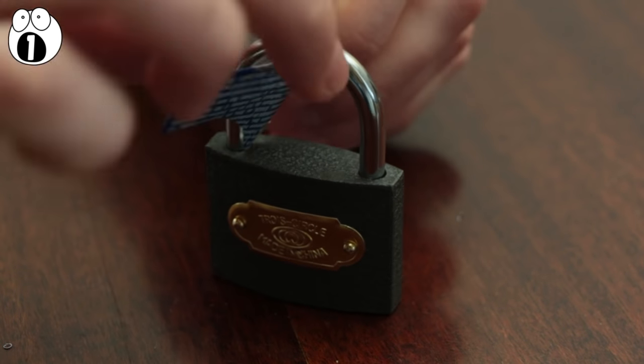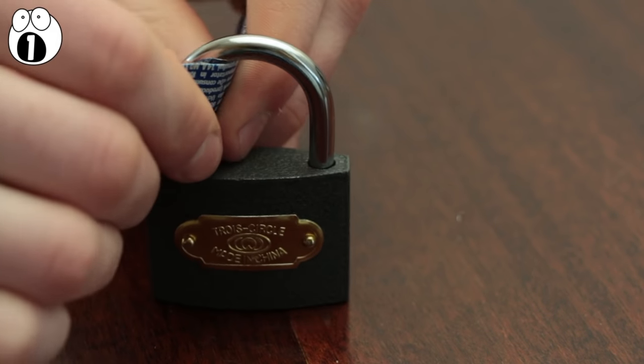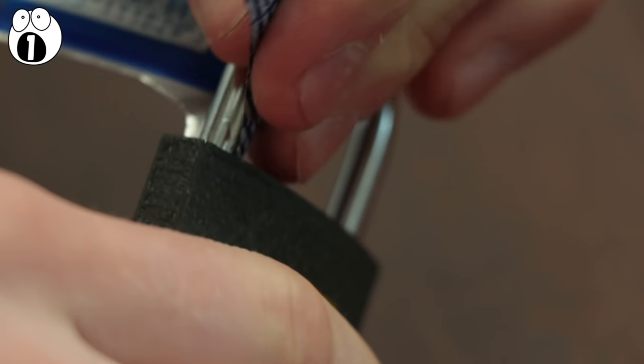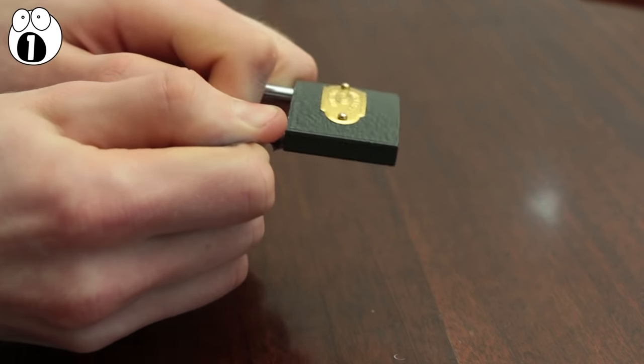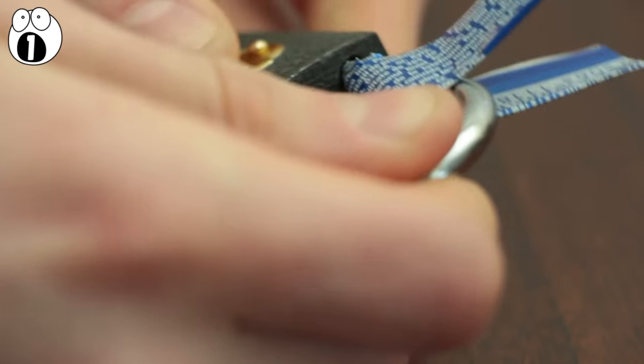Now all you have to do is work the shim with the pointed end, face down along the lock side of the padlock. Once you've worked it into where the shackle meets the locking mechanism, squeeze both ends of the shim together. Pull up on the lock at the same time, and hey, presto, you're free!